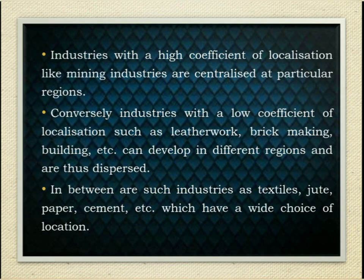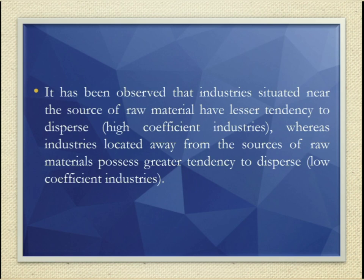In between are such industries as textiles, jute, paper, cement, etc., which have a wide choice of location. It has been observed that industries situated near the source of raw material have a lesser tendency to disperse — that is, high coefficient industries — whereas industries located away from the sources of raw materials possess a greater tendency to disperse — that is, low coefficient industries.